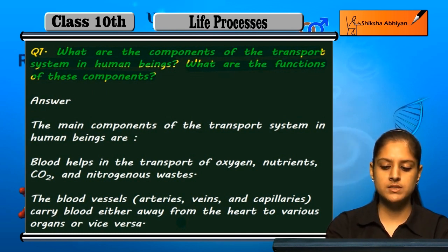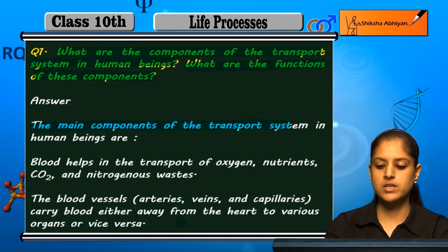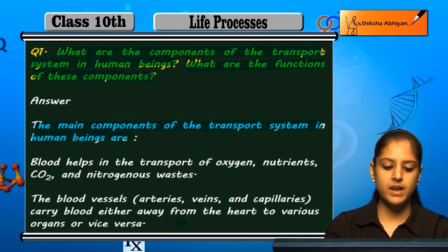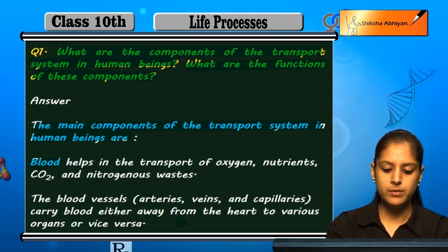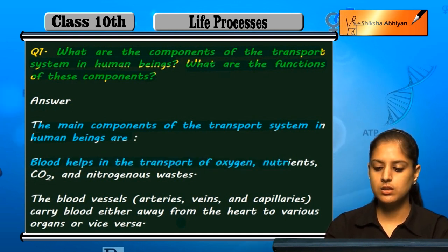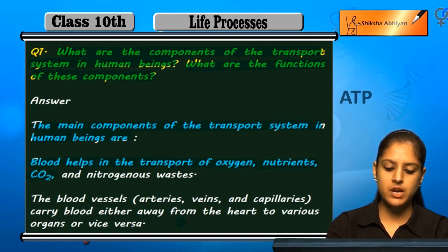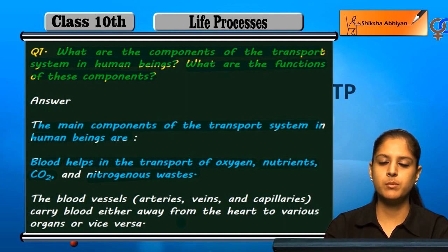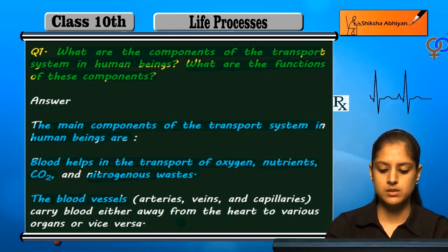There are three main components of the transport system in human beings. The first is blood, which carries oxygen, nutrients, carbon dioxide, and nitrogenous waste, helping the transport system function throughout the whole body.